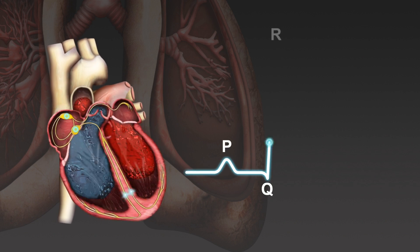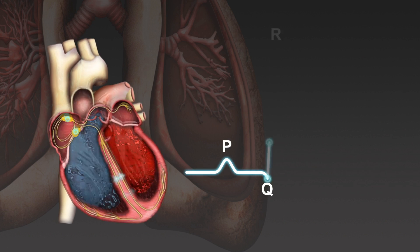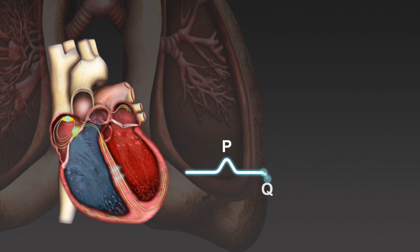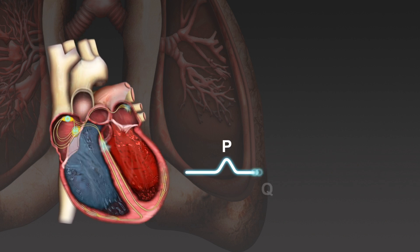During atrial fibrillation, the electrical activity of the atria becomes disorganised. As a result, there is no P wave on the ECG of a patient in atrial fibrillation. The absence of P waves is one of the most important features used to diagnose atrial fibrillation.